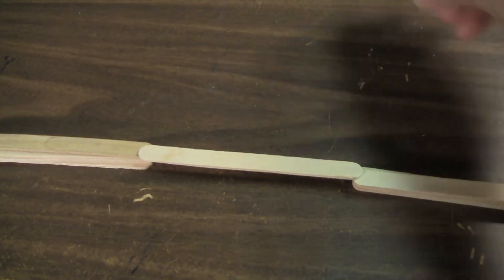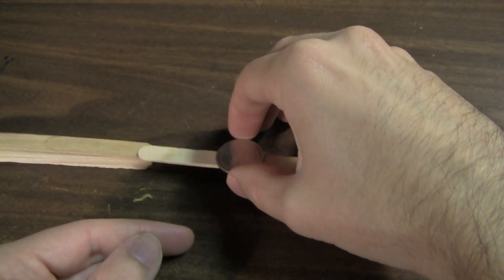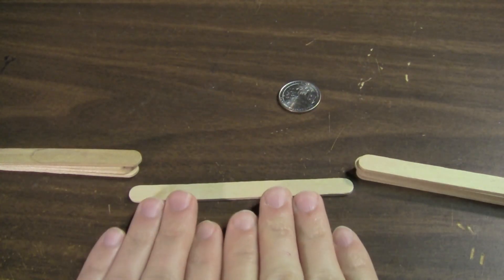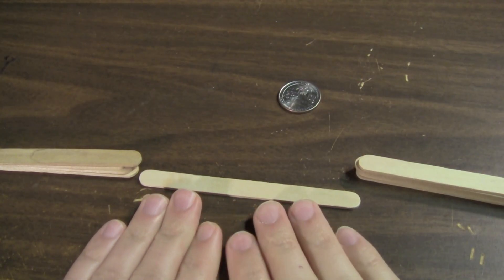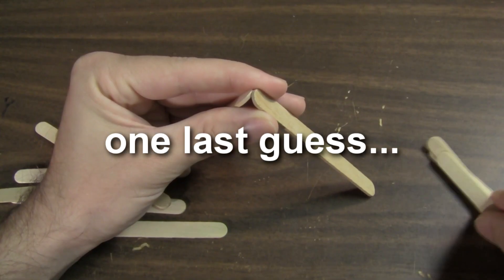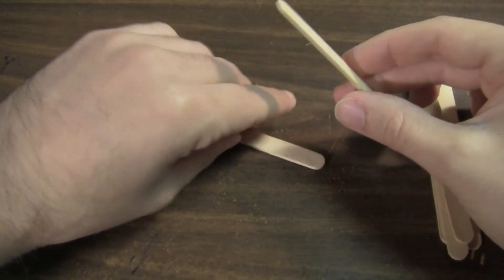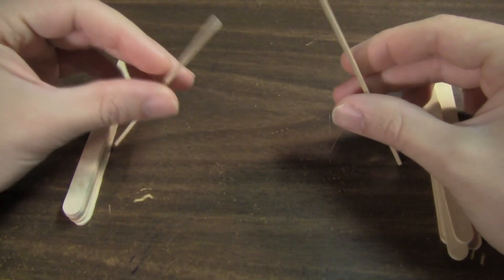This could actually support weight. The problem is my hands are wider than one popsicle stick. Build up some mass. I could really use some glue right now.